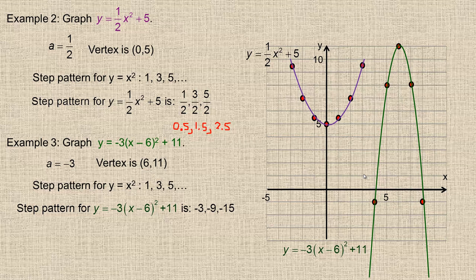So just to summarize, that step or stretch number is always just multiplied by the 1, 3, 5, 7, 9 step pattern. So locate your vertex, find the step for your particular parabola, and use it to get other points once you plot your vertex and draw your parabola. And that's it.